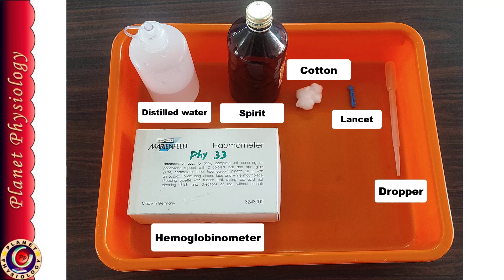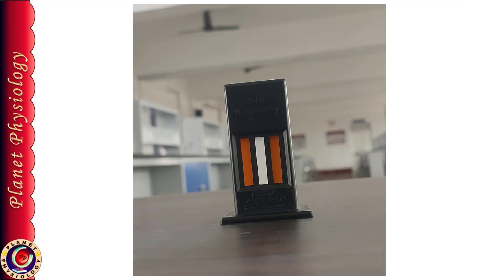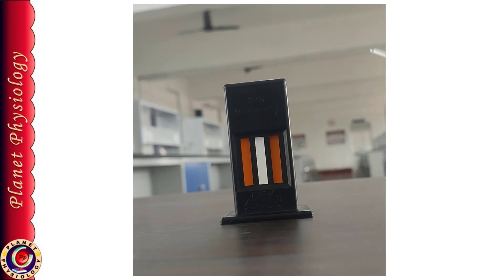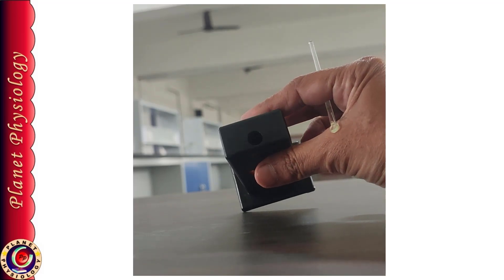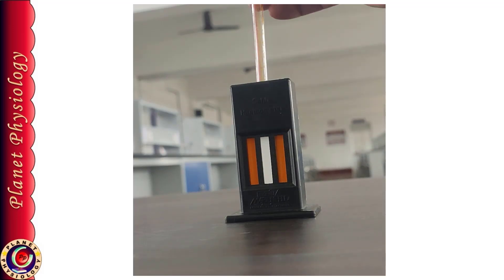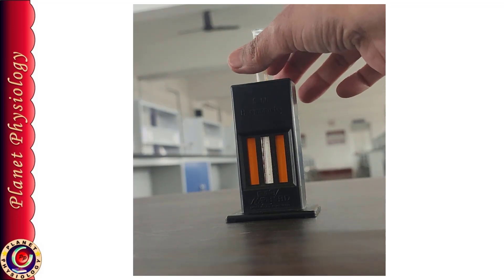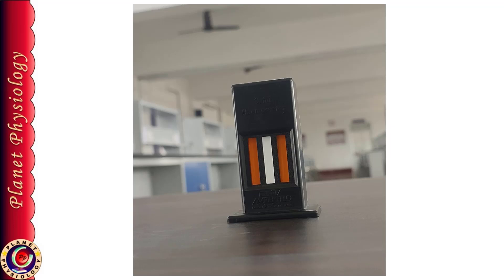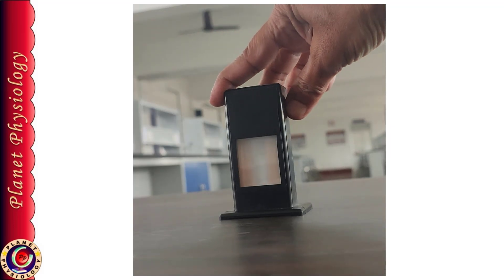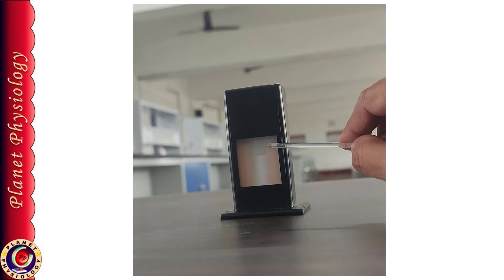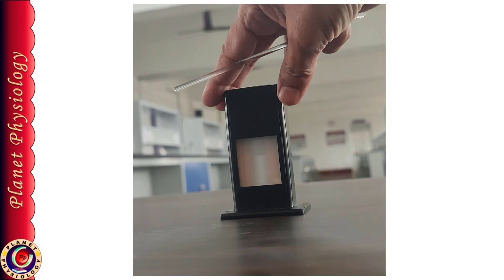Each of these components plays a crucial role in the accuracy and efficiency of the test, and hence it is essential to know them thoroughly. Sahli's hemoglobinometer is a specialized device used to compare the color intensity of acid hematin with the standard color. These are the standard comparator plates. Between these two plates, there is space to accommodate the hemoglobin tube. The back side of this comparator has an opaque white plate, which helps to match the color of acid hematin in the tube with the standard plates while holding it against the light.